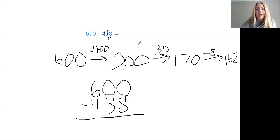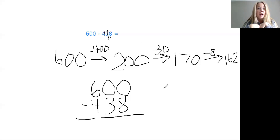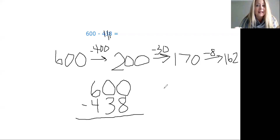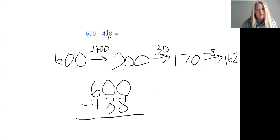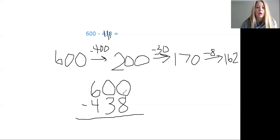We have that subtraction poem, which Mr. Martin and Mrs. Bowser have been using with you, so by now you should know it: More on the top, no need to stop. More on the floor, go next door and get 10 more. Number's the same, zero's the game. When we are subtracting from a multiple of 100, because multiples of 100 always have zero tens and zero ones, usually there's going to be more on the floor. So it gets a little tricky and you have to regroup a couple of times. When you are subtracting from a multiple of 100, you have to cross the zero. As you get older, you're going to have to cross more zeros in numbers like a thousand and 30,000. But it all starts here today.